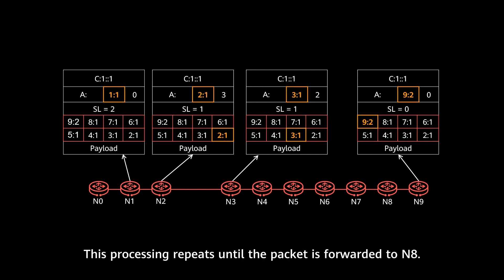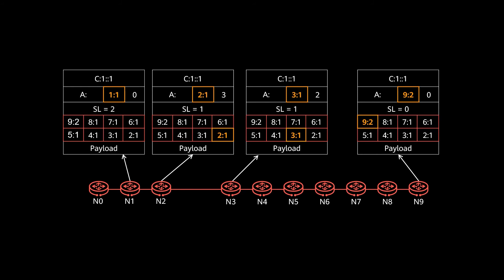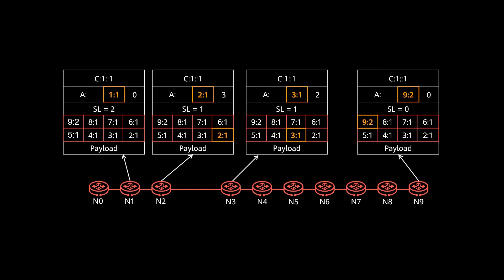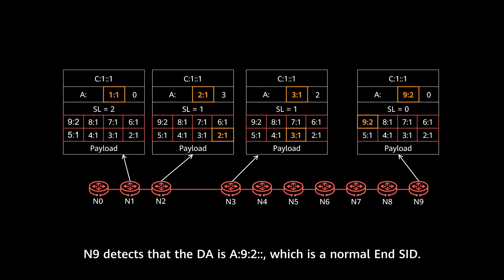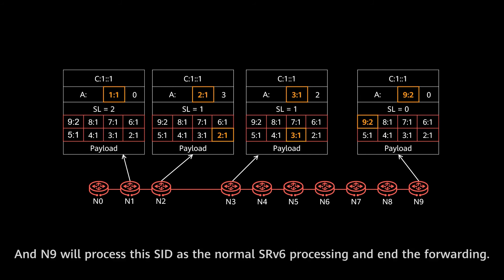This processing repeats until the packet is forwarded to node 8. When the packet is forwarded from node 8 to node 9, node 9 detects that the DA is 8::9:2::, which is a normal End SID allocated by itself. So node 9 processes this SID as normal SRV6 processing and performs END decapsulation.